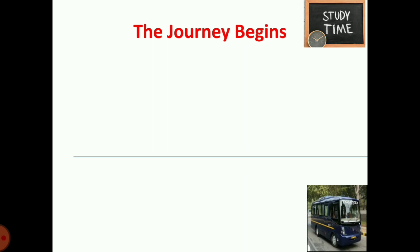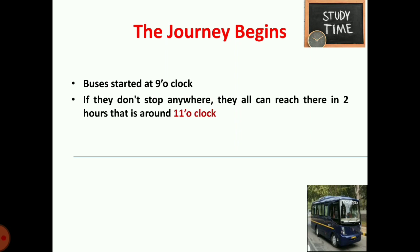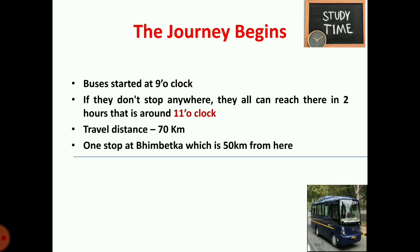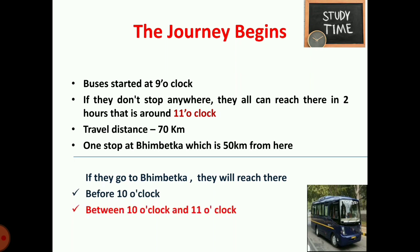The journey begins. Buses started at 9 o'clock. Without stopping, they could reach in 2 hours, arriving at about 11 o'clock. The travel distance is 70 kilometers. They planned to stop at Bimbetka, which is 50 kilometers away. Since 70 km takes 2 hours, 50 km would take between 1 and 2 hours, so they would reach Bimbetka between 10 o'clock and 11 o'clock.